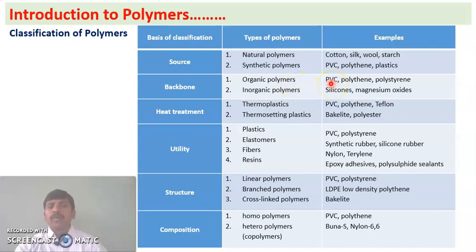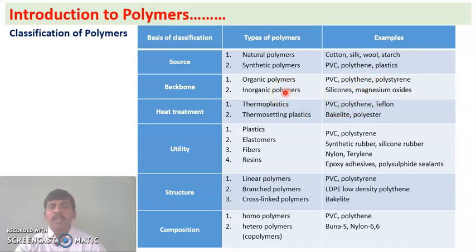Whether the polymer is natural or synthetic, if its backbone is organic (carbon-based), it is considered an organic polymer. Examples are polyvinyl chloride, polythene, and polystyrene. In inorganic polymers, the backbone is inorganic. Examples of inorganic polymers are silicones and magnesium oxides.